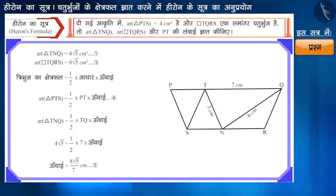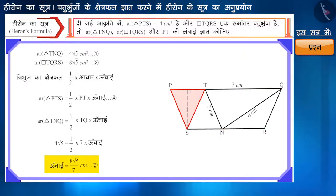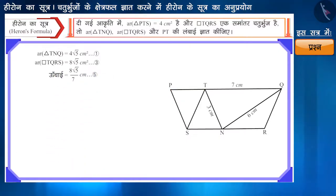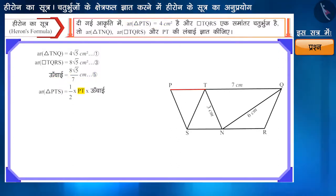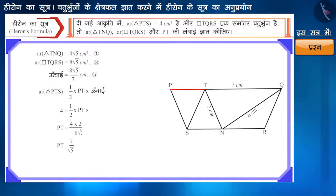दोस्तों, त्रिभुज TNQ और त्रिभुज PTS एक ही समानांतर रेखाओं PQ और SR के बीच स्थित हैं। इसलिए त्रिभुज PTS की ऊँचाई भी 8√5/7 सेंटीमीटर ही होगी। अब हम इस समीकरण में क्षेत्रफल और ऊँचाई का मान प्रतिस्थापित कर PT यानी आधार आसानी से ज्ञात कर सकते हैं। वीडियो पॉज़ कर आप इसका प्रयास करें। यहाँ हमें PT की लंबाई 7/√5 सेंटीमीटर प्राप्त हुई।